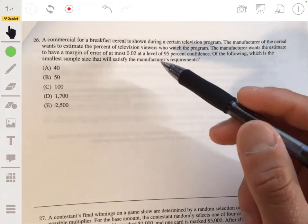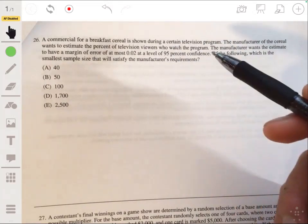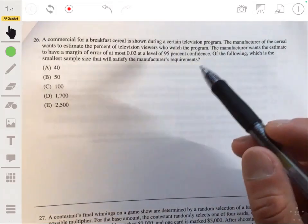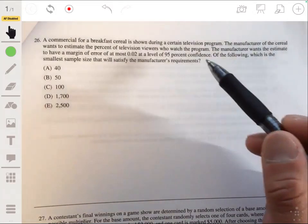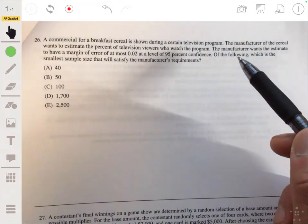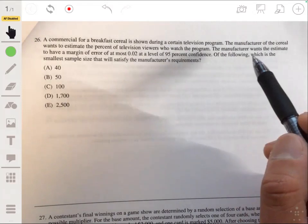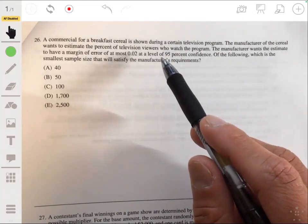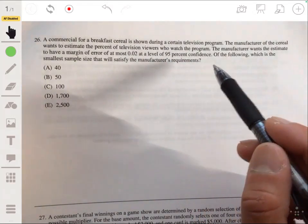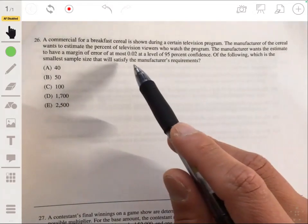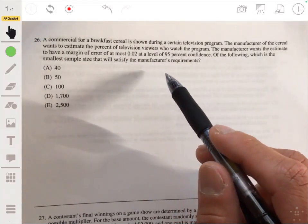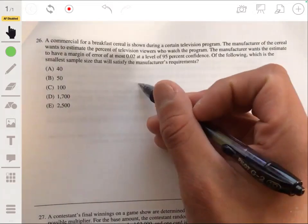26. A commercial for a breakfast cereal is shown during a certain television program. The manufacturer of the cereal wants to estimate the percent of television viewers who watch the program. The manufacturer wants the estimate to have a margin of error of at most 0.02 at a level of 95% confidence. Of the following, which is the smallest sample size that will satisfy the manufacturer's requirements? Okay, so for this,